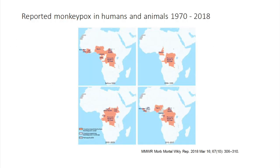Between 1970 and 2018, we've seen a steady increase in reported cases and outbreaks across African countries — Central and West Africa. That really reflects the rodent pools, in terms of why we're seeing increased and varying outbreaks in different countries in these regions. Nobody's quite sure, but probably something to do with the change in population immunity against orthopox viruses.